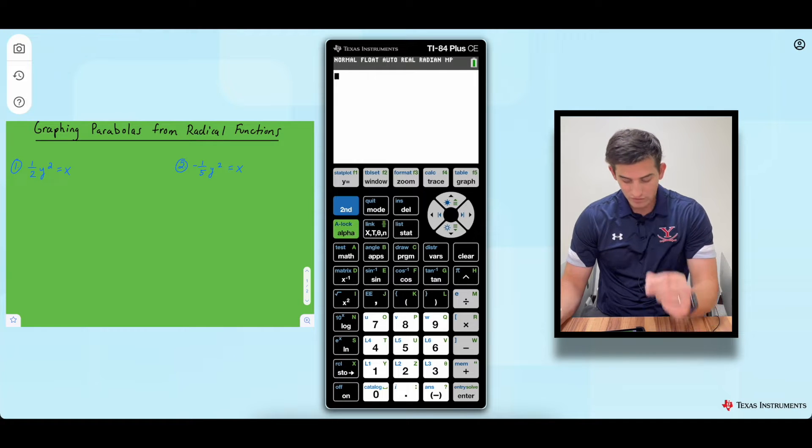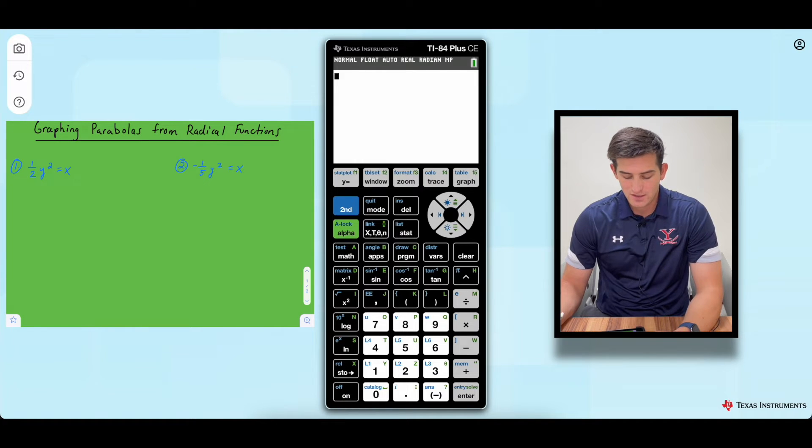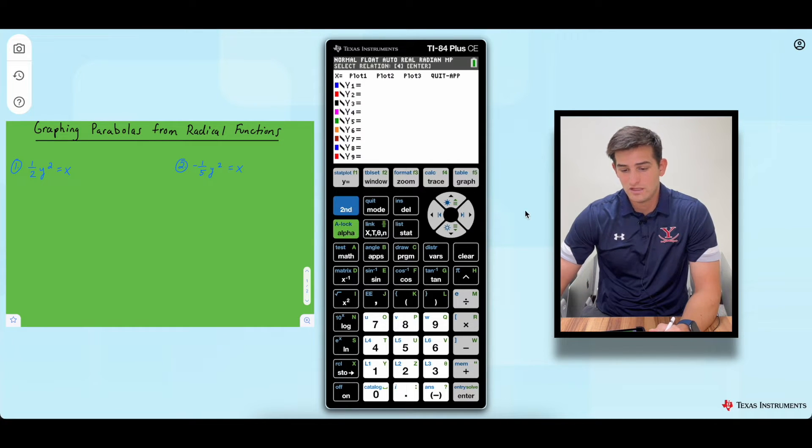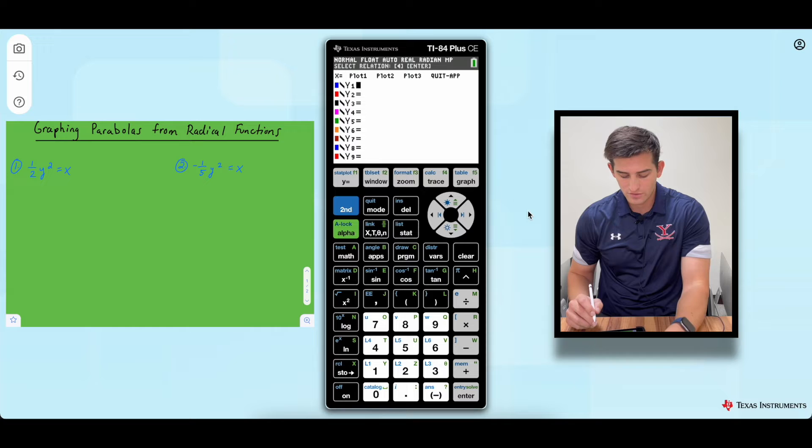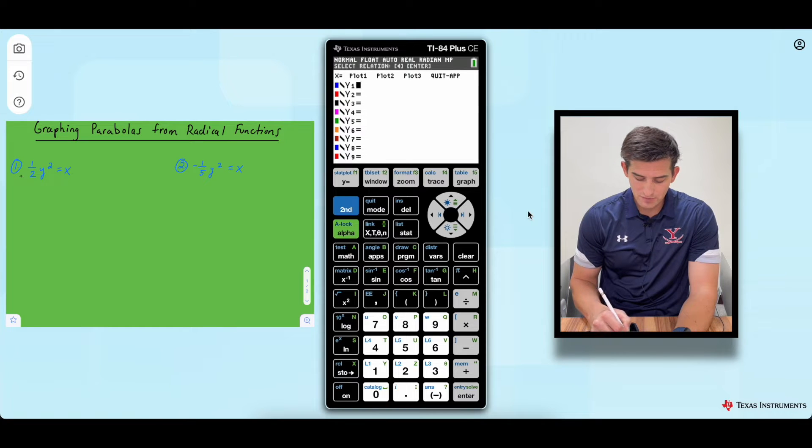So number one, we're going to look at one half times y squared is equal to x. The key to graphing these in the calculator is we have to solve them for y. When we go to the calculator and we hit y equals, notice that in order for us to graph anything, we have to solve it for y. So I noticed that I could multiply both sides by two and that's going to get rid of that one half. So now we have y squared is equal to 2x.